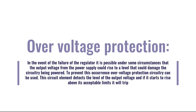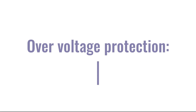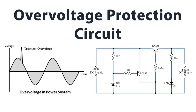6. Over voltage protection. In the event of the failure of the regulator, it is possible under some circumstances that the output voltage from the power supply could rise to a level that could damage the circuitry being powered. To prevent this, over voltage protection circuitry can be used. This circuit element detects the level of the output voltage and if it starts to rise above its acceptable limits it will trip, removing the supply from the regulator and usually clamping the output to zero volts, thereby protecting the remaining circuitry from damage.